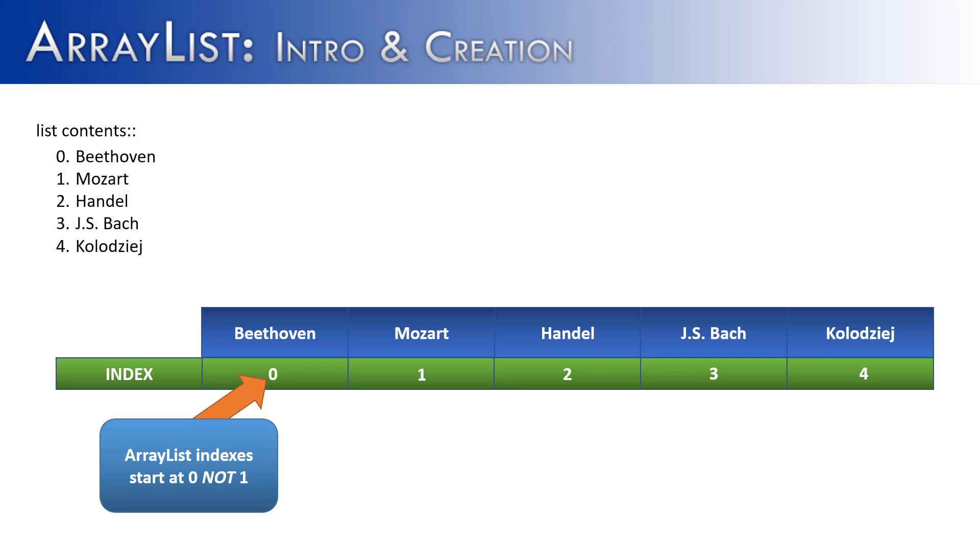And then I could access each element inside of the ArrayList. So if I wanted to pull out Mozart or Bach, I would just say, what's the element in 1? Or what's the element in 3? So as I said, if you're familiar with arrays, it's going to look exactly like an array because the underlying data structure is an array.